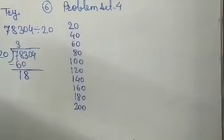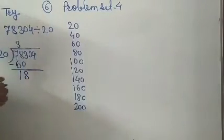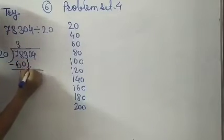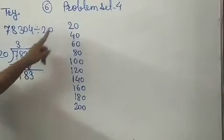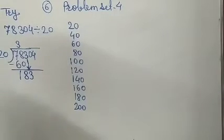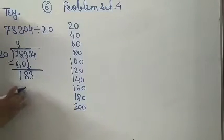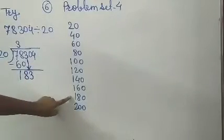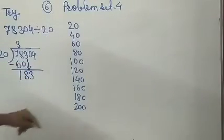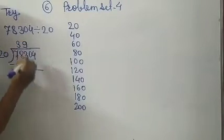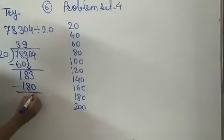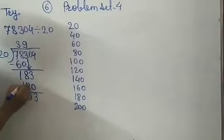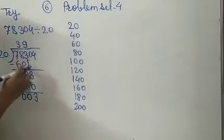So here we completed this step. Next, after these two numbers, which number is there? 3 is there, so take this 3 down. Now we check if this number is in the table. It is not there, so we want the number smaller than 183. Which number is it? It is 180, and 9 times 20 is 180. So write 9 up top and 180 below. Now subtract: 3 minus 0 is 3, 8 minus 8 is 0, 1 minus 1 is 0.